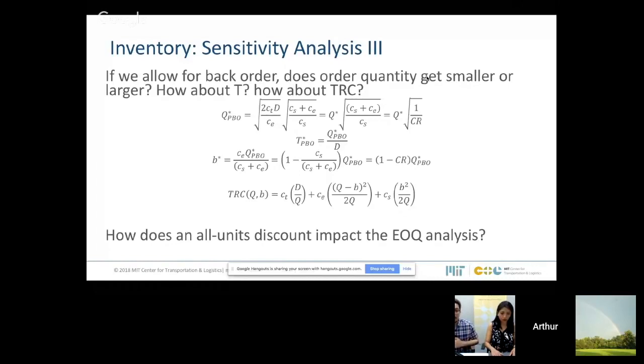So the only thing that happens is you will also have a second value of order, second order quantity to compare. So you take your EOQ, you look at the cost. You also look at the second order quantity that you have chosen to take the discount and compare the cost. That's how it impacts our EOQ analysis.